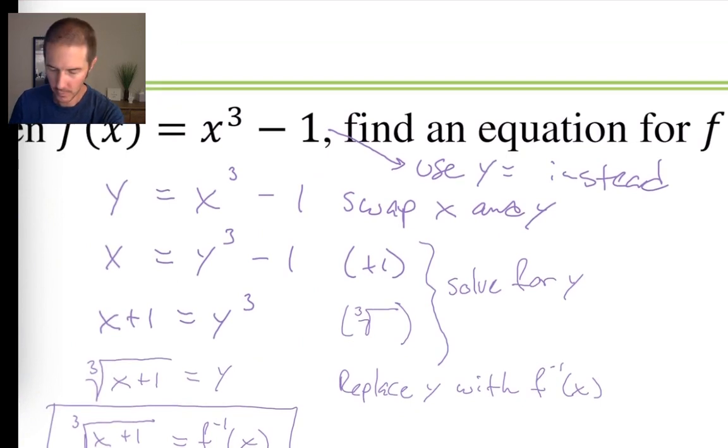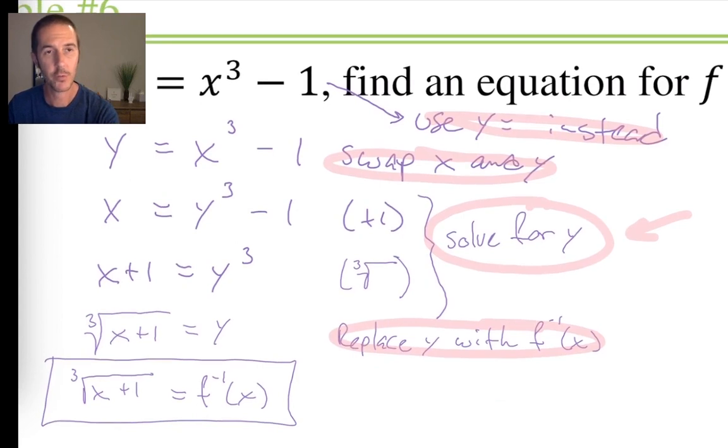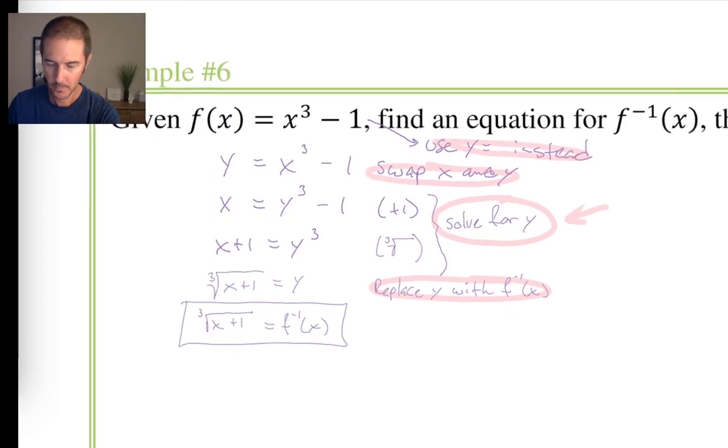The first step of using y instead of function notation, that's going to happen every time. Swapping x and y, that's going to happen every time. The process of solving for y might look different. These individual steps are going to be different from problem to problem. But this part of the process, generally speaking, solving for y, that's going to be the same. And then finally, your very last step, replacing y with f inverse. That's going to happen every time. So realize that these four steps are going to get applied to each problem. But this portion of the process in here is going to look a little different from problem to problem.